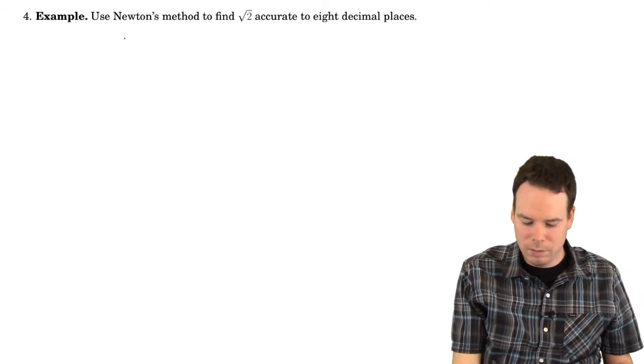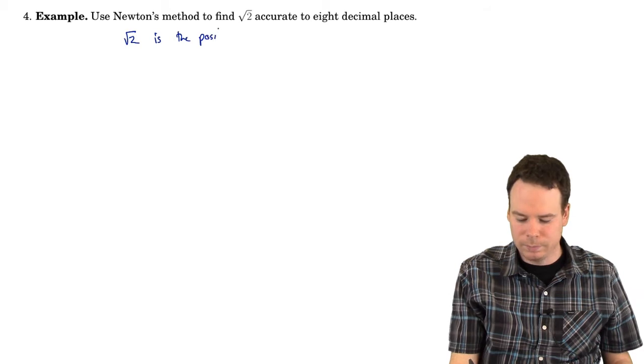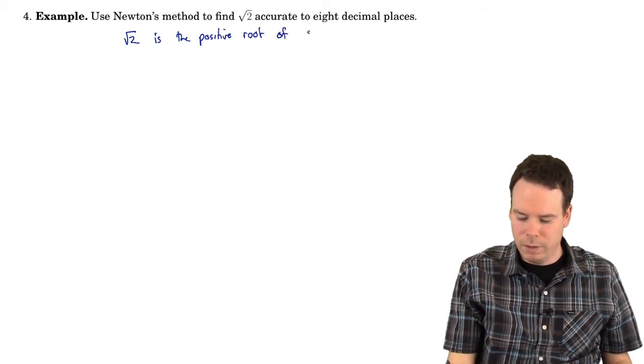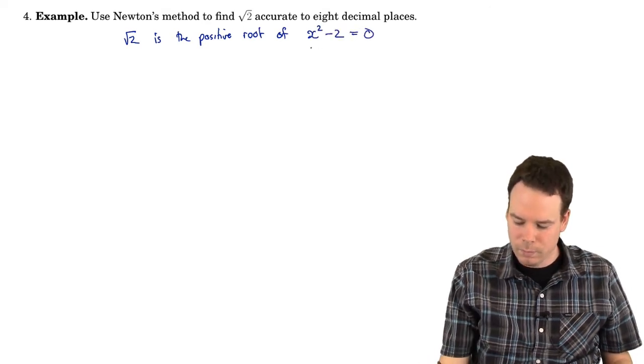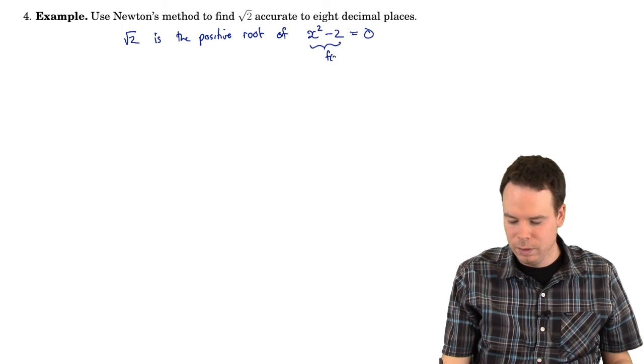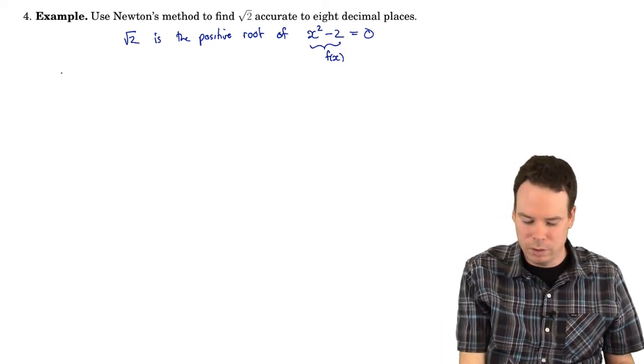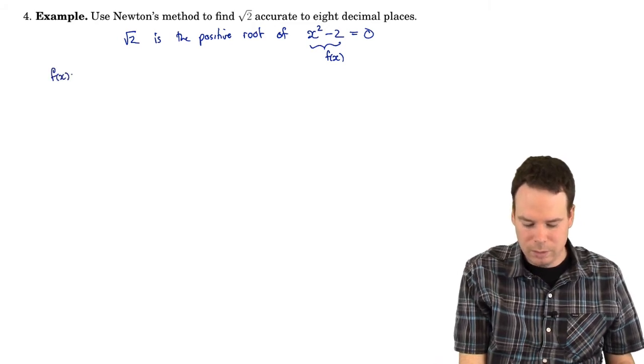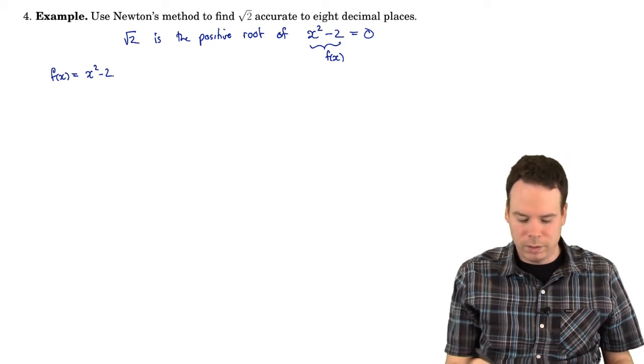So the thing to note here is that the square root of 2 is the positive root of the equation x squared minus 2 equals 0. And we're going to call this f. So now we've taken this statement and translated it into a question about a root of a function. So our function in this case is x squared minus 2. We want to approximate a root of it.